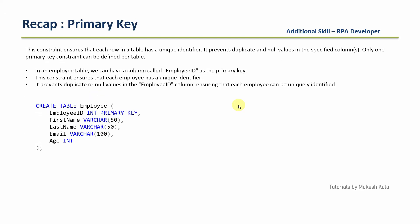Talking about the primary key — just a quick recap — whenever we want to make sure that my table has a unique identifier, which means that I do not want duplicate records in my table, I simply use a constraint which is called a primary key. To create a primary key, you simply have to create a table, and whichever column you want to have the primary key, you just mention 'primary key' like that. And as we have already discussed, this column cannot be null. In case you have any doubts about primary key, please refer the previous video; the link is available in the description.